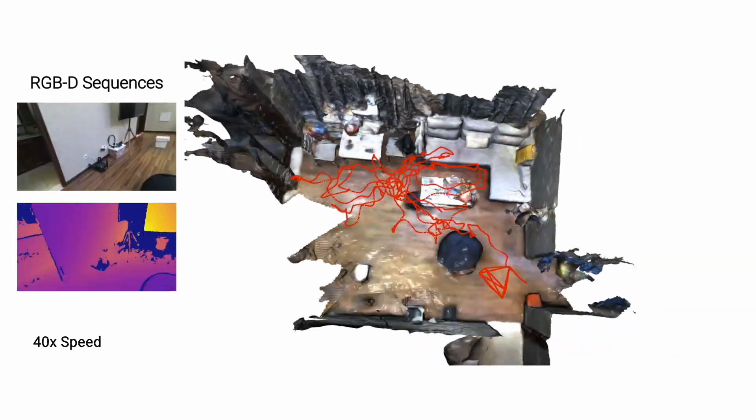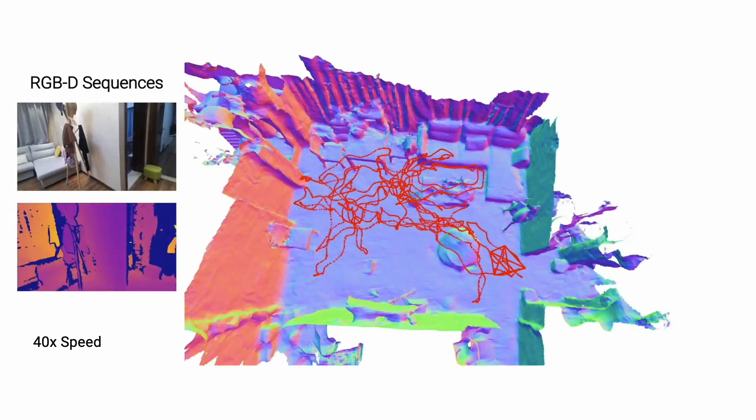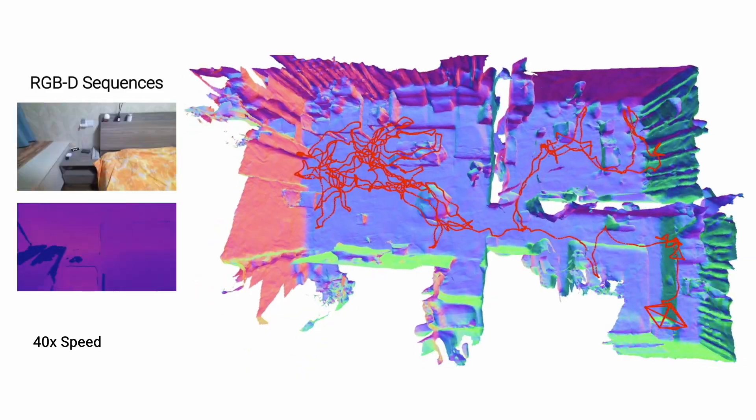Given an RGBD sequence that is captured with a handheld camera, Nice Slam can on the fly produce detailed dense geometry as well as accurate camera tracking on such a large-scale indoor scene.